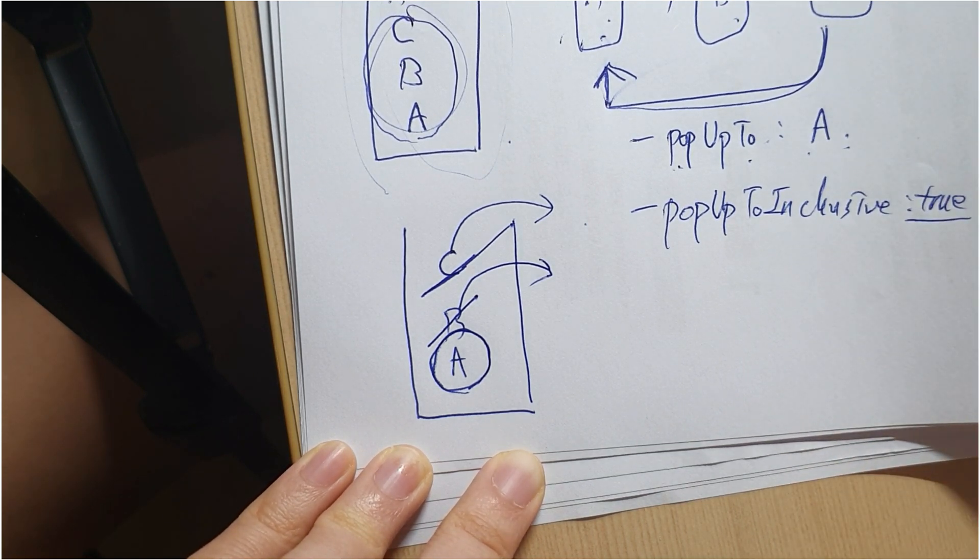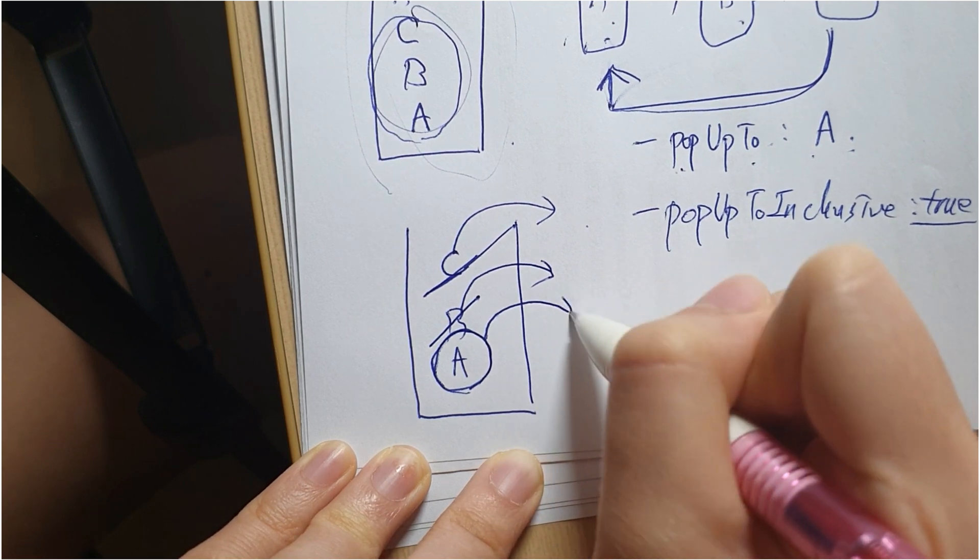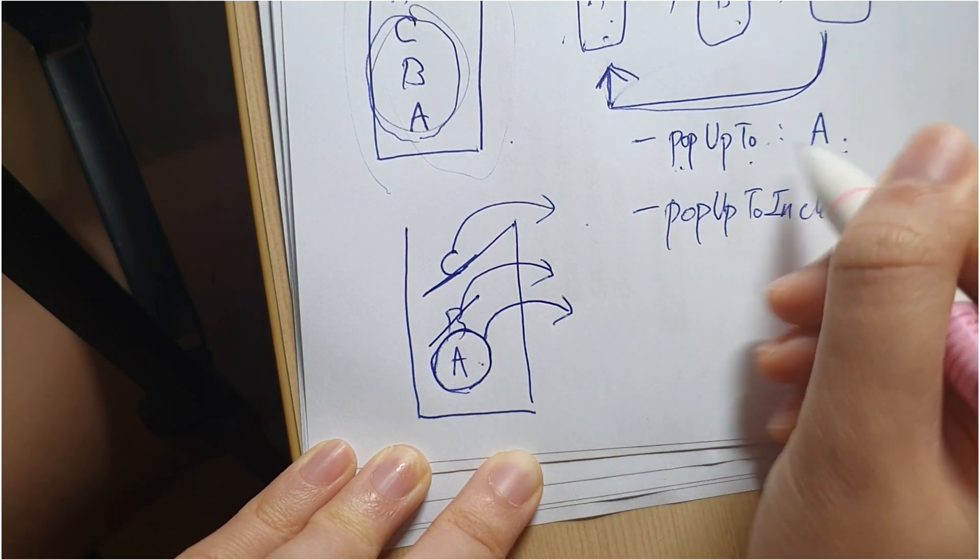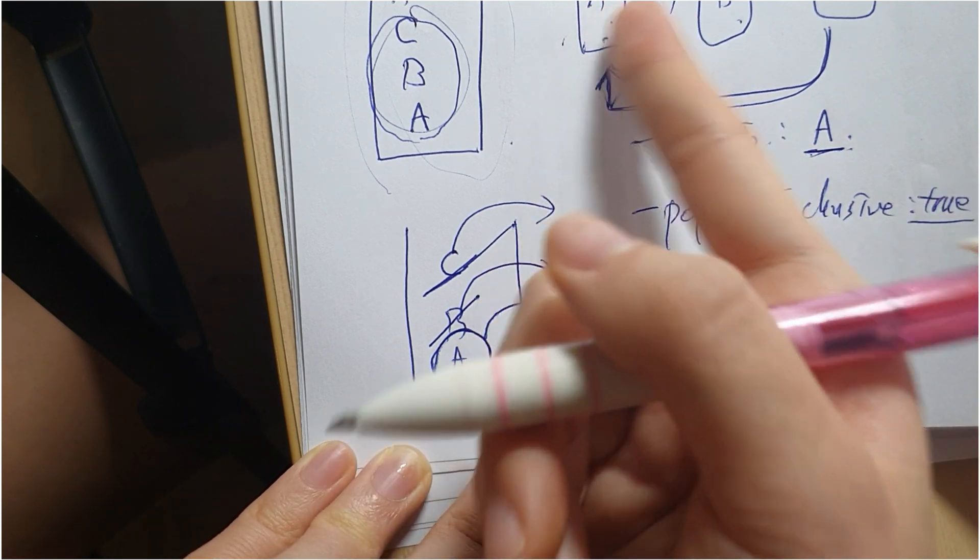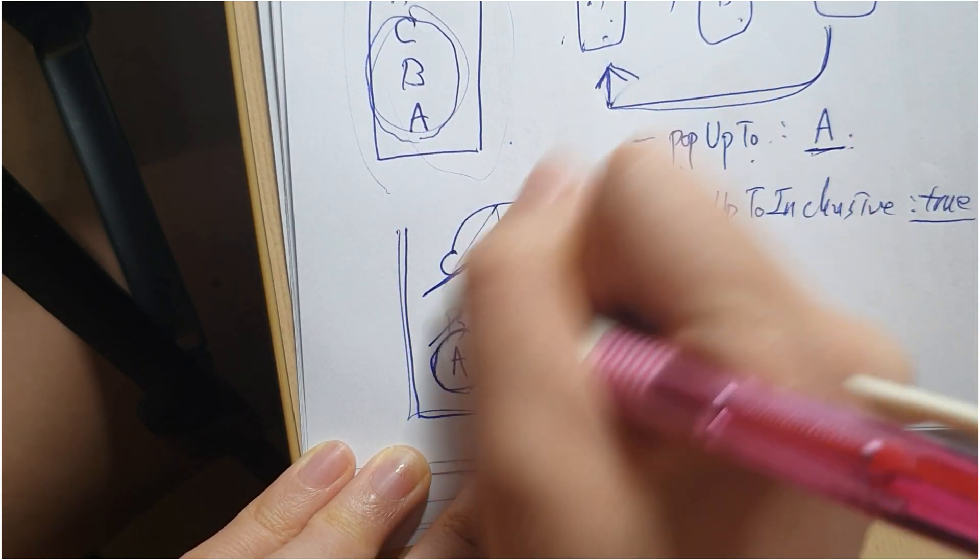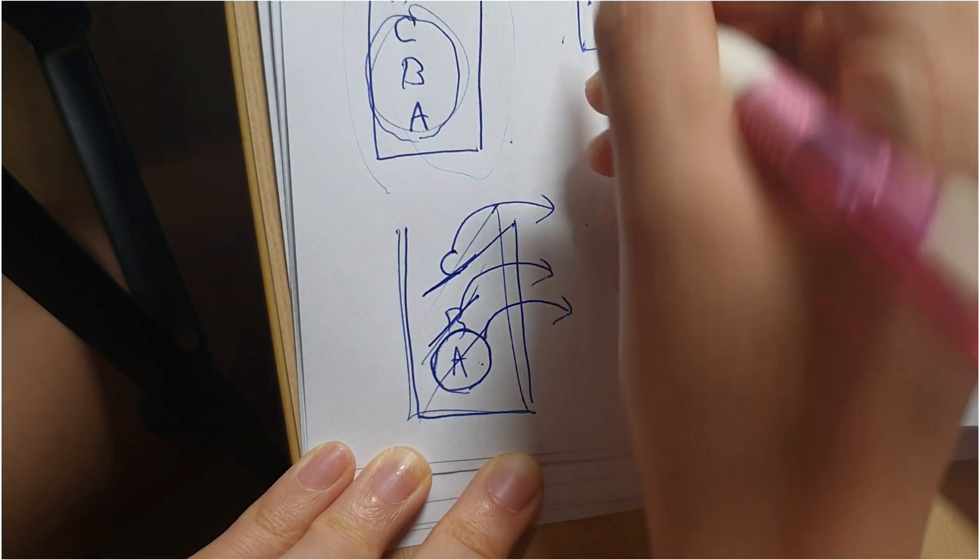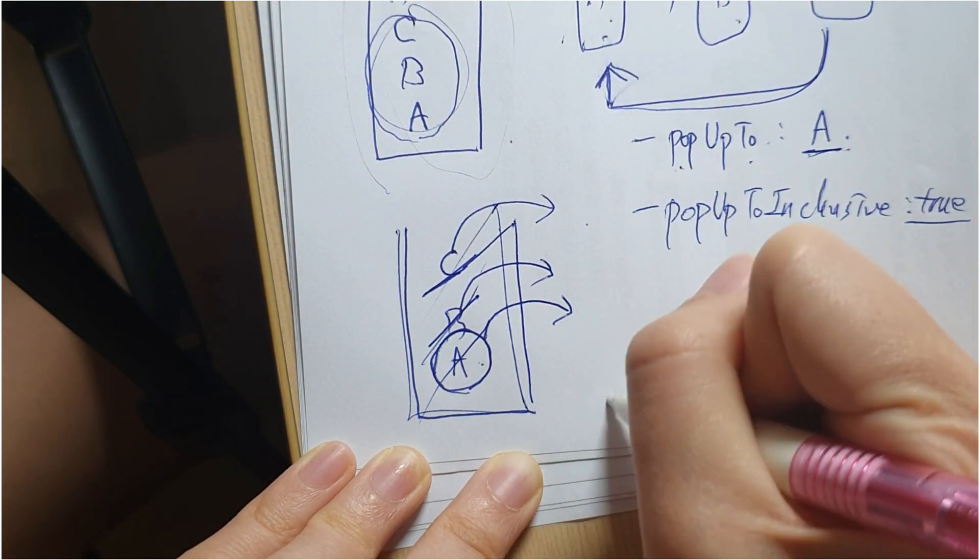This means that we're going to pop this A as well - we're going to pop the destination as well. So before we go to A, the back stack is going to be cleared, and A to B is going to be stacked again.